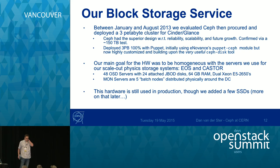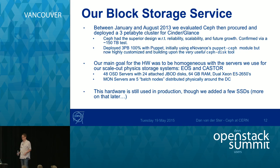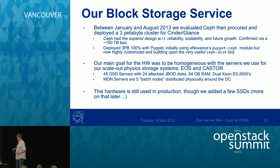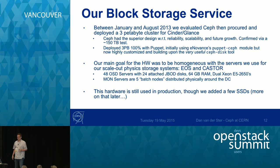For hardware, the main goal was to be homogeneous with our existing scale-out storage systems so we could easily move hardware between different storage services. The initial cluster was 48 servers, 24 OSDs per server attached with a simple HBA, 64 gigs of RAM, dual Xeons. The monitors were five batch nodes or CPU servers distributed randomly around our data center. This is still used in production, though we did add some SSDs.